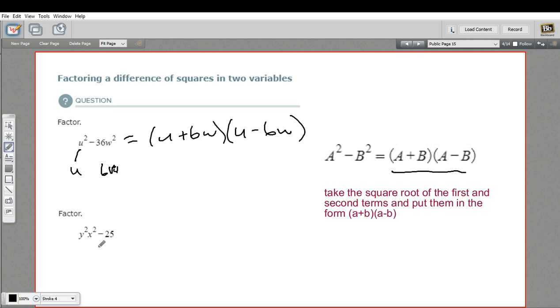Let's try one more. This one looks slightly more complicated. On the left, we've got y squared, x squared, and then after our minus sign, we've got 25. Well, I know how to take the square root of 25. That's just 5.